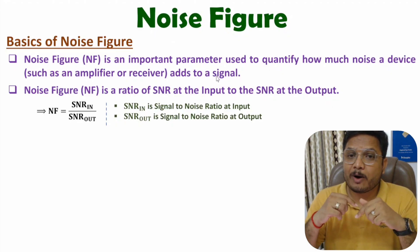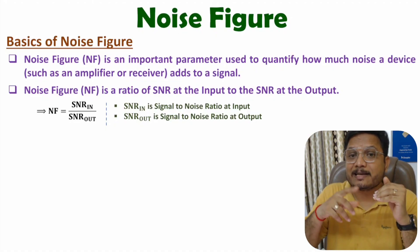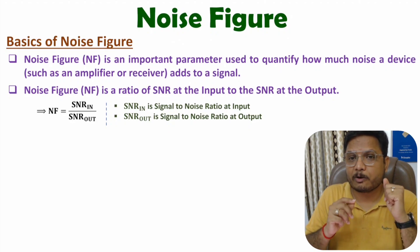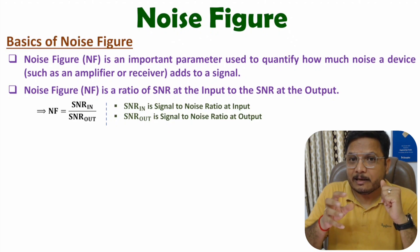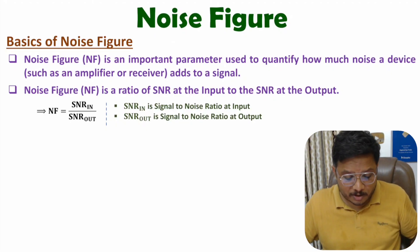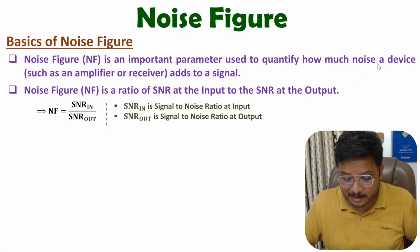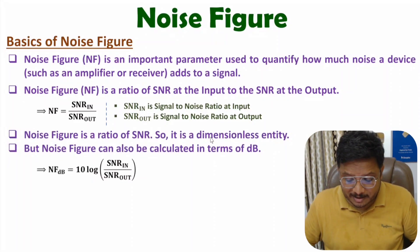If you have a higher value of noise figure, then one can say the device is adding higher noise to the given signal. And if you have a lower value of noise figure, then one can say the device removes noise from the given signal. So based on noise figure, one can understand how much noise a device adds to the signal. It is a ratio, so it is a dimensionless entity.